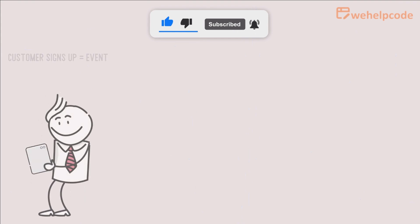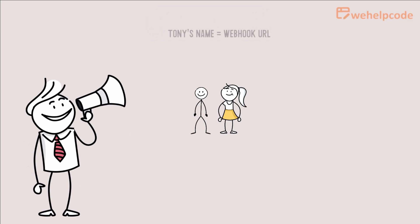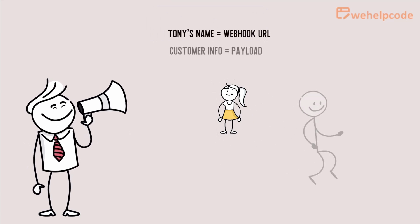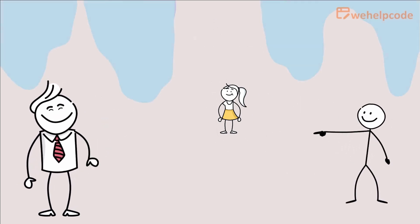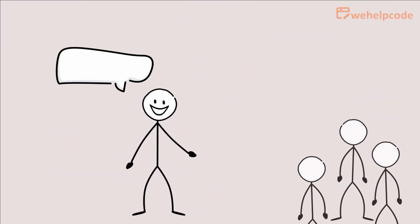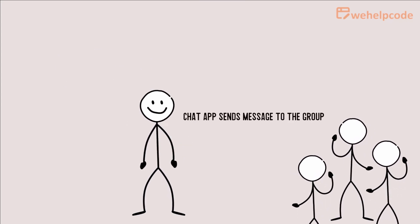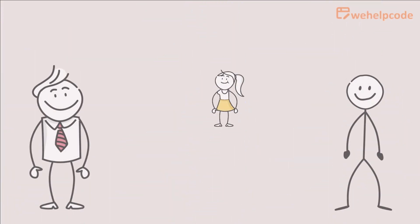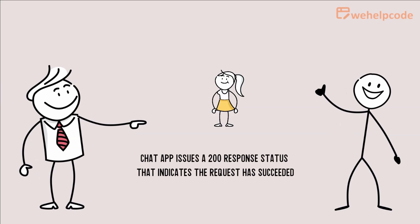A customer signs up with Peter. Peter then calls Tony's name and gives Tony the customer information. After Tony receives the customer information, Tony then informs the sales group regarding the customer. Tony then confirms to Peter that the sales group has been informed regarding the customer information.